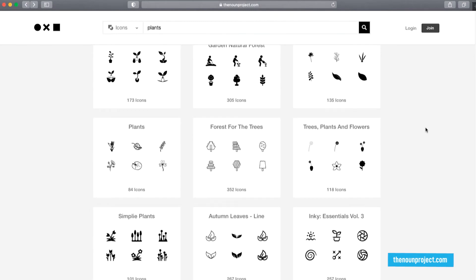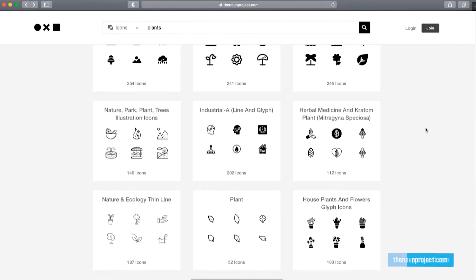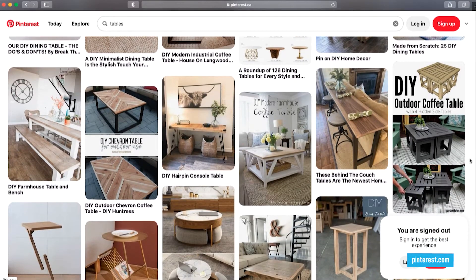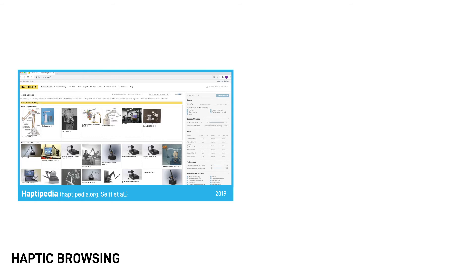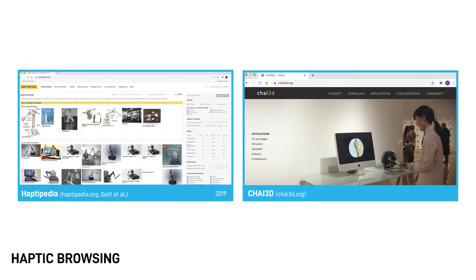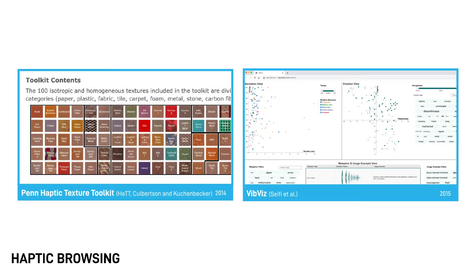Browsing existing resources is an important step for ideation. Online collections are great resources for inspiration in visual design, but browsing haptic content online is challenging since one experiences haptic sensations through specific hardware. Nonetheless, public haptic resources are emerging. Haptopedia is a public collection that focuses on GFF hardware. Chai3D is an open-source software framework and API for creating GFF applications, and it also provides a set of example applications. The PEN haptic texture toolkit and VIVE VIS focus on vibrotactile technology. The PEN haptic texture toolkit is a collection of 100 textures rendered through a voice coil vibration actuator. VIVE VIS is a collection of 120 vibration patterns with rich sensation, emotion, and metaphor descriptions from users.